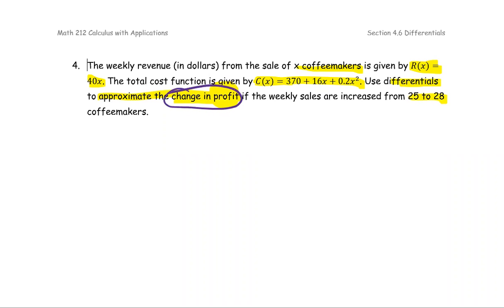The change in profit, the delta profit, the capital P. So we're going to use the differential P to approximate delta P. And the differential P is P prime multiplied by dx. So we're going to set up as dP equals P prime times dx.